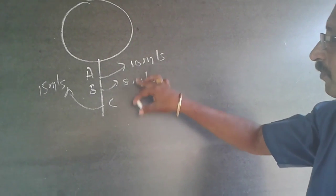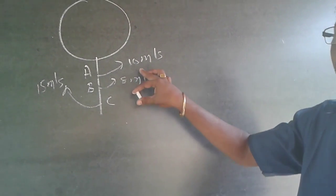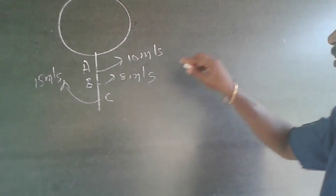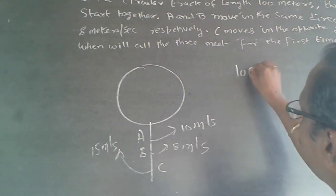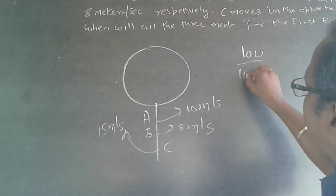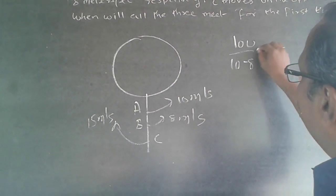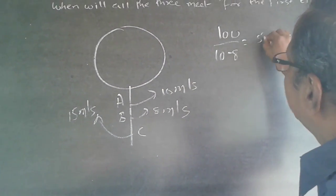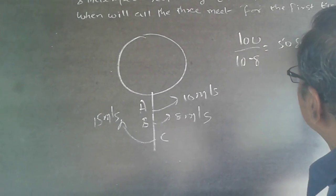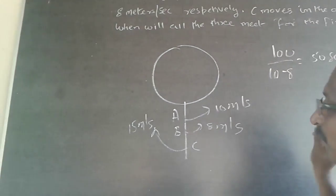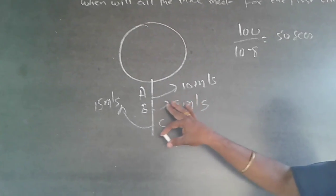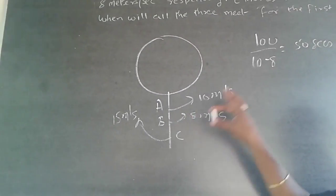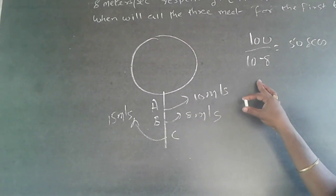Every second, A gains two meters over B (10 minus 8). To gain 100 meters, it takes 100 divided by 2 = 50 seconds. So every 50 seconds, A will be meeting B.